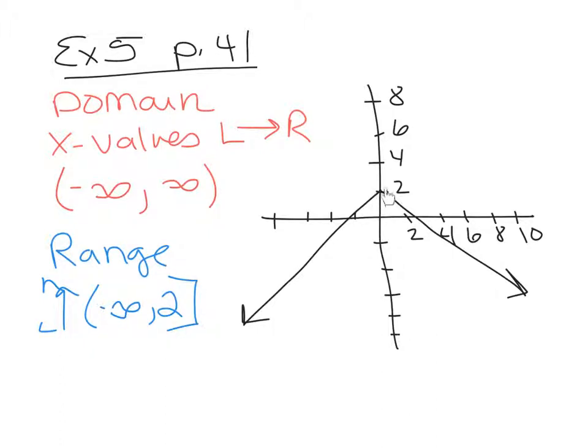If there was an open circle at the 2, we would use parentheses. But since it actually hits the 2, it gets brackets.